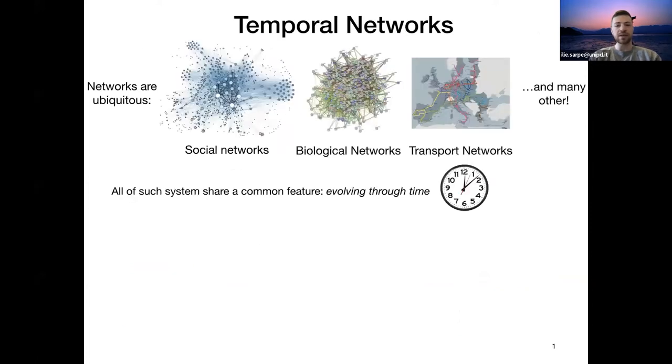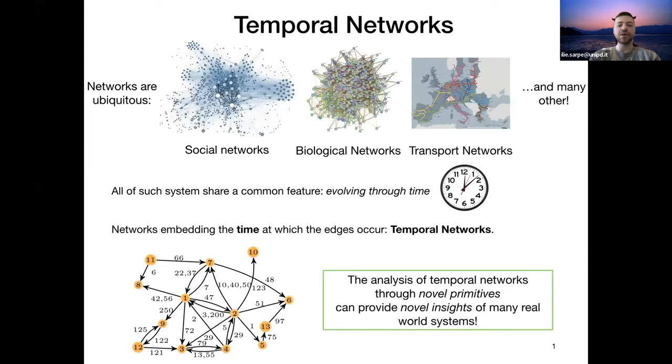Let me start by introducing a bit of context. We all know that the network paradigm allows us to analyze many real-world networks. For example, social networks, biological networks, and many others. One thing that all these systems share in common is that they evolve through time. For example, each time a friendship occurs over social networks, the structure of such network changes. So in order to account for this behavior, researchers introduced temporal networks.